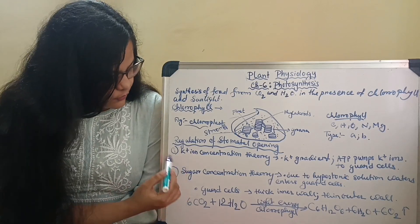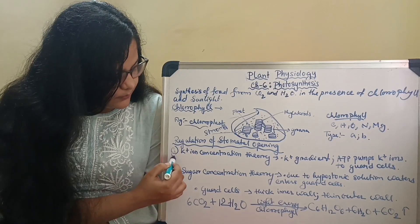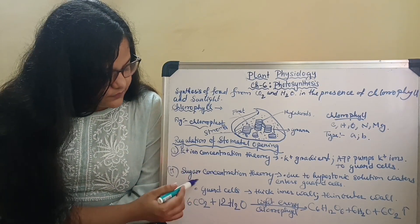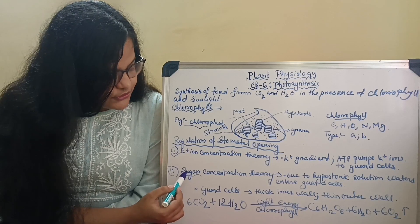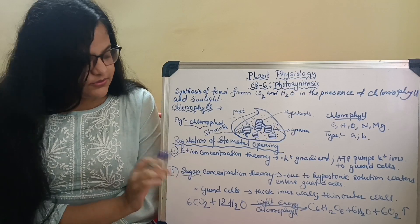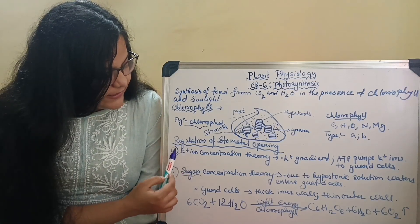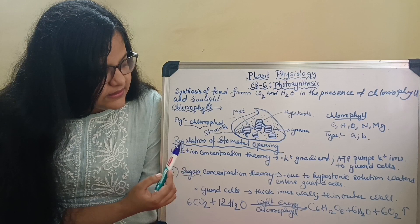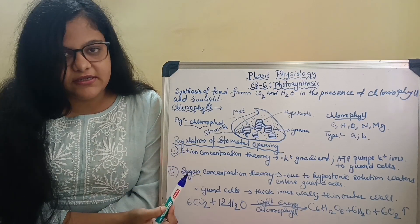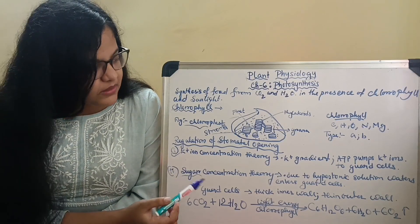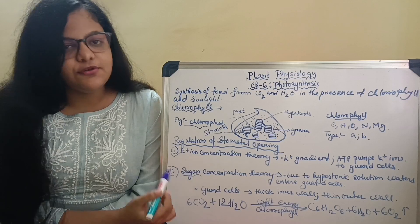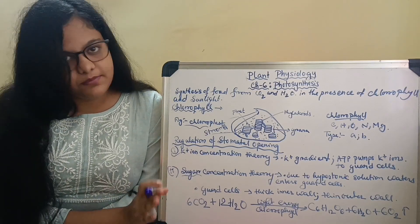One, which is the most recent, is the potassium or K+ ion concentration theory. Another, which is the older version, is the sugar concentration theory. Now let us discuss these two theories. The K+ ion concentration theory deals with the K+ ion gradient. How is that gradient built?